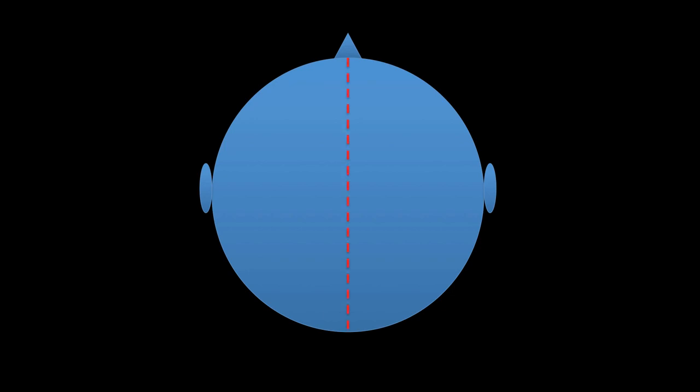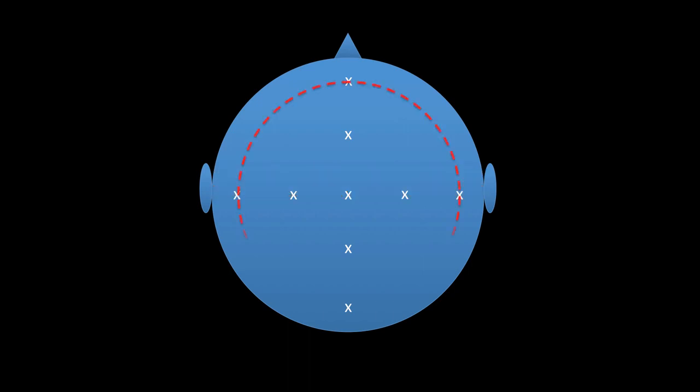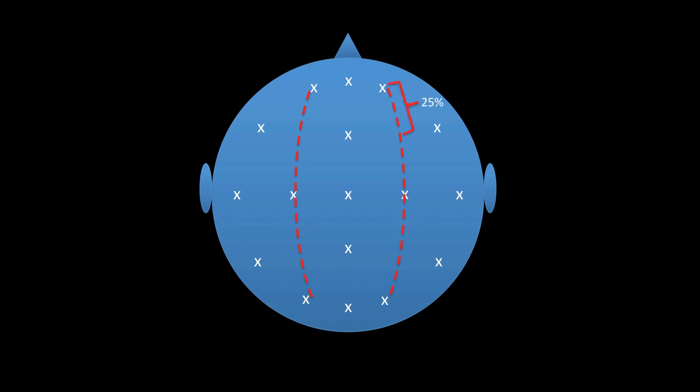Consider this diagram of a head looking from the top down. The first measurement is made from the nasion to the inion, front to back. This measurement is then divided into 10 and 20% increments — this is how the 10-20 system gets its name. Marks are placed, and then a measurement is made from one preauricular point to the other, again divided into 10 and 20% increments. Further marks are made around the circumference of the head separated by 10% increments, and parasagittal measurements are made separated by 25% increments.